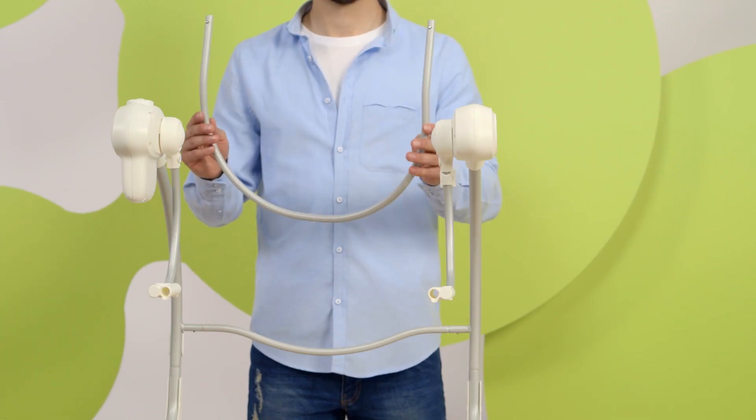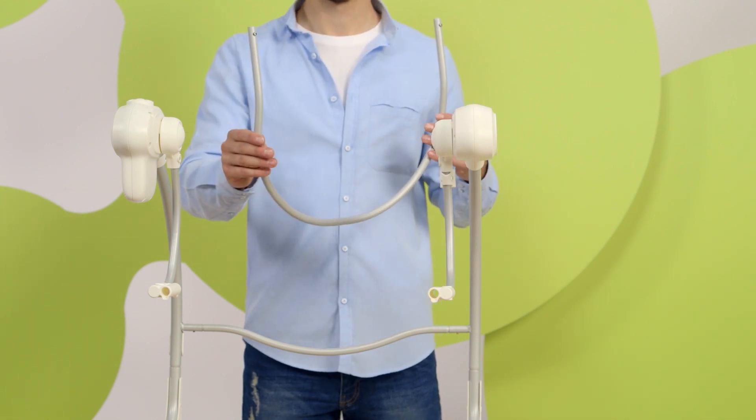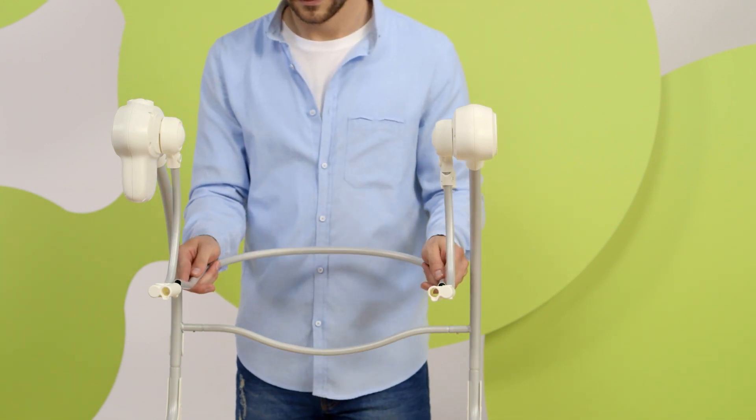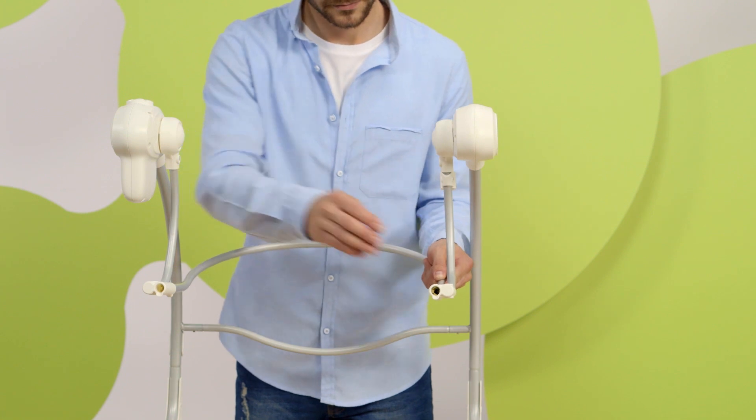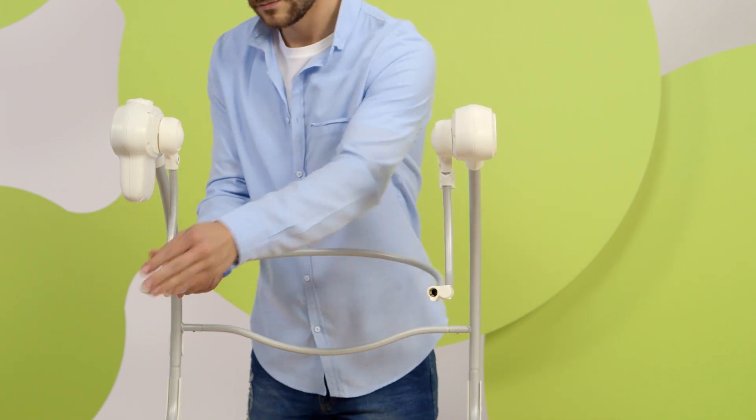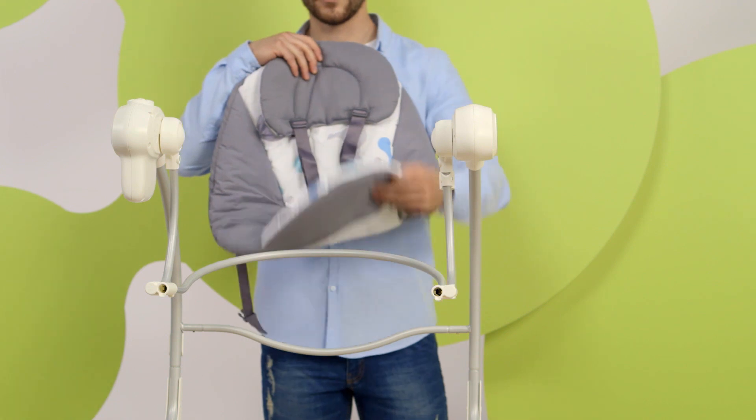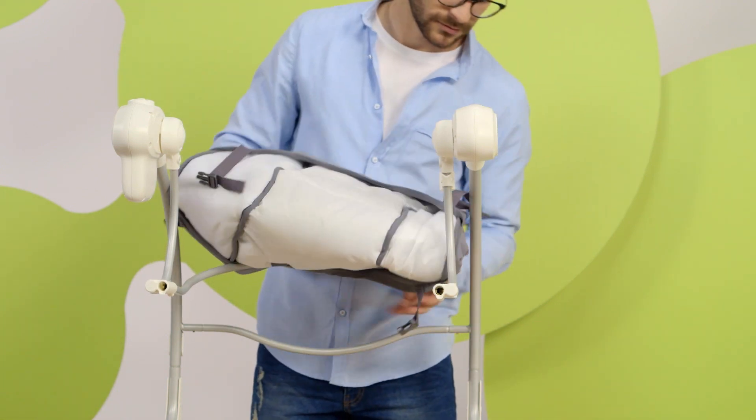What's left is the assembly of the seat. The U-shaped tube is inserted from the back into the white holes. We put on the cover, stretch it over the tube.